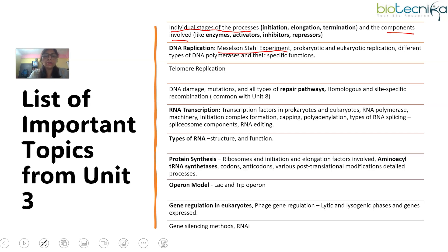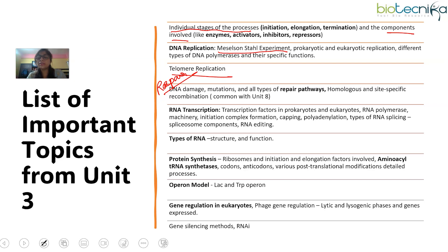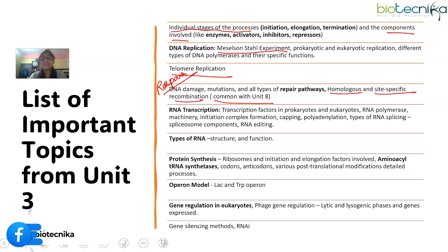From the DNA replication subunit, telomere replication and telomerase are quite important — you should have a complete understanding about them. DNA replication also comes with the DNA repair process, and all repair mechanisms must be done very thoroughly — base excision repair, nucleotide excision repair, and any other repair mechanism. Regarding recombination, there is homologous and site-specific recombination. It is better to prepare these here because they are common with Unit 8. Preparing them here means you're also covering that part of Unit 8 simultaneously.